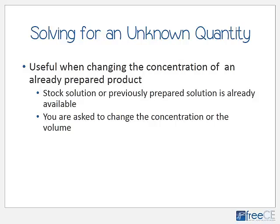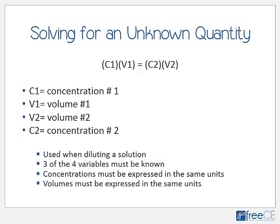Now we'll solve for a missing quantity using the concentration-volume formula: C1 times V1 equals C2 times V2. C1 is the concentration and V1 is the volume of the first solution; C2 and V2 represent the second solution. This formula is used when diluting solutions — adding volume to make a solution weaker. Three of the four variables must be known, and concentrations must be in the same units as each other, as must the volumes.